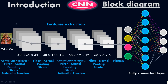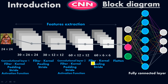Then we have convolutional layer 2, and we do exactly the same thing again — using filter kernels. We may do padding, but remember, padding is not always required. You only need padding if you want to preserve every feature of the image. Sometimes you need it and sometimes you don't — it depends on your model. In convolutional layer 2 we also apply stride and activation function. In this second layer we have a total of 60 filters with a size of 12 by 12.